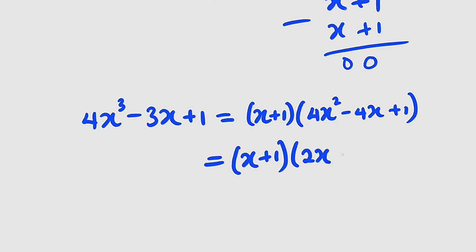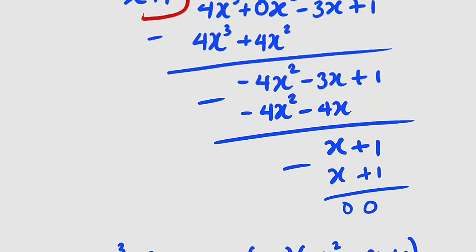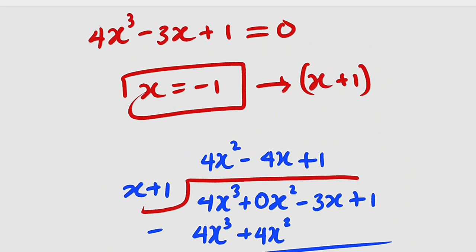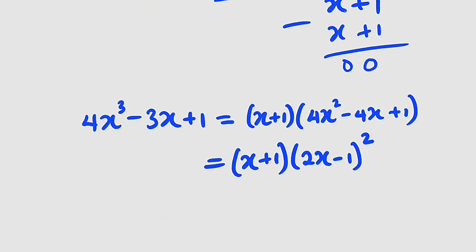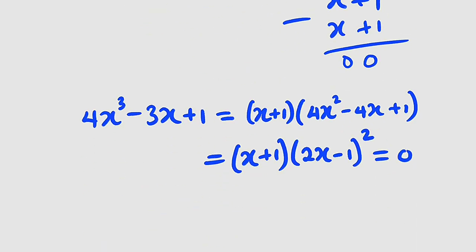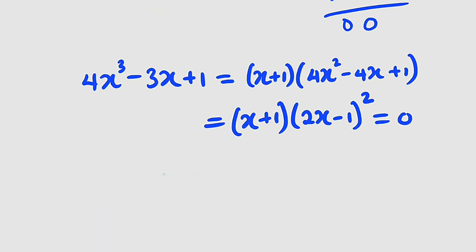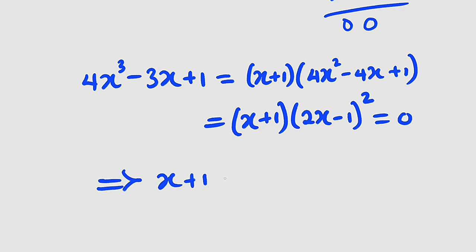The whole expression was equal to 0, so we equate each factor to 0. From the first factor: x plus 1 equals 0.